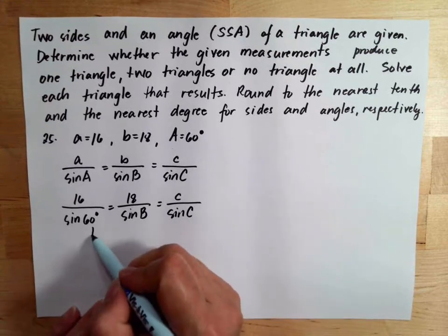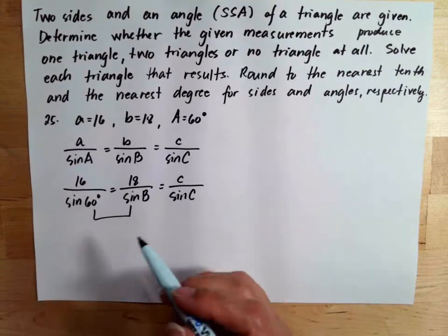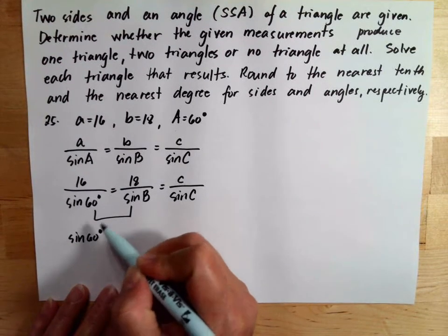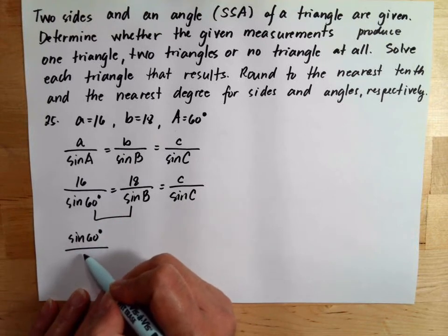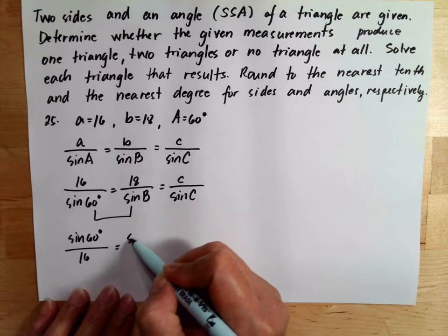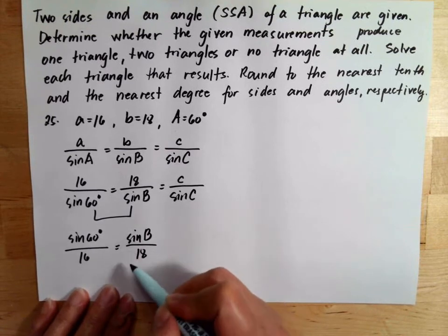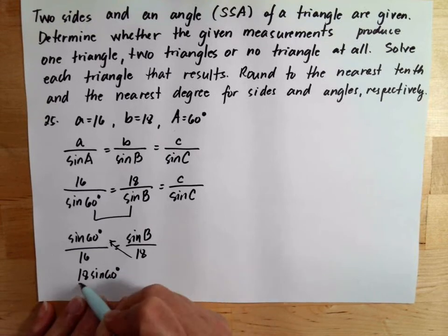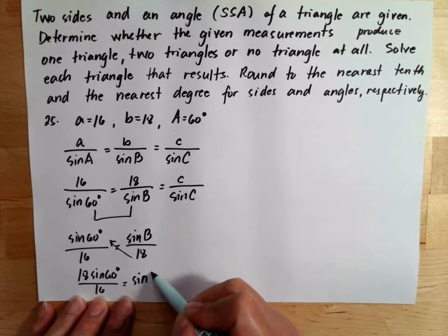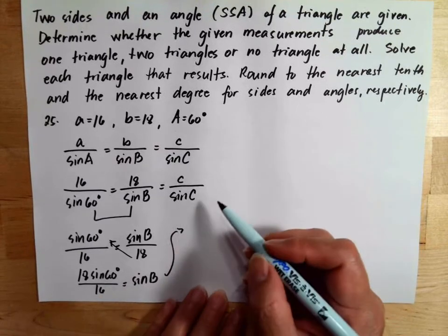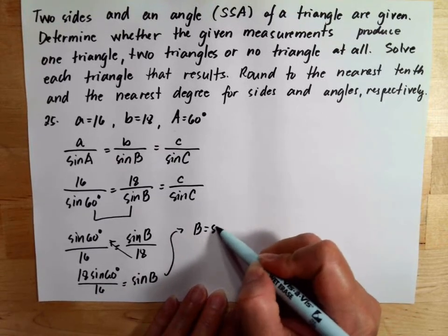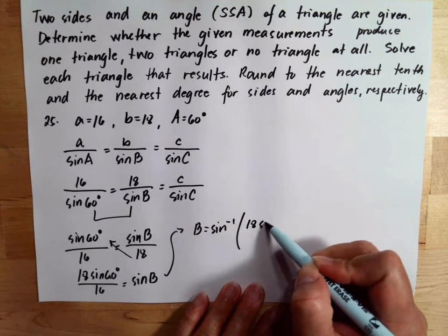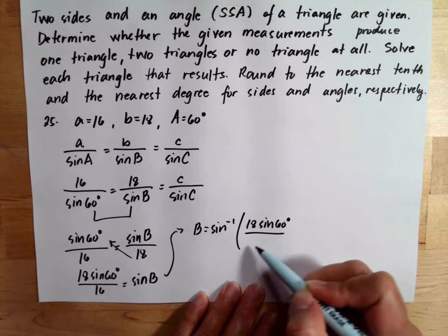We can use this to solve for angle B. Since we need the angle, we flip the ratio. So we have sine 60 over 16 equals sine angle B over 18. Cross multiply: 18 sine 60 degrees over 16 equals sine angle B. Then take the inverse to solve for angle B, giving us 18 sine 60 degrees over 16.